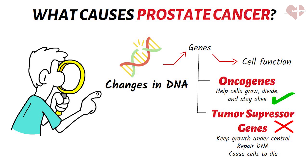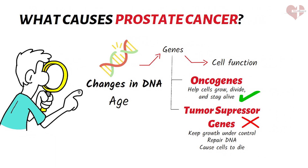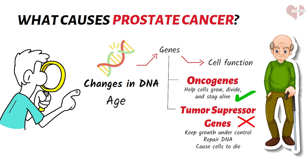DNA changes can either be inherited from a parent or can be acquired during a person's lifetime. Additionally, one of the key risk factors for prostate cancer is age. As men get older, the risk of developing prostate cancer increases. Other risk factors include family history of prostate cancer and race.